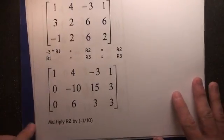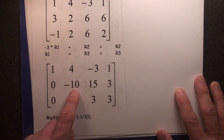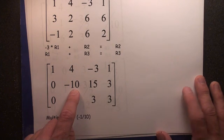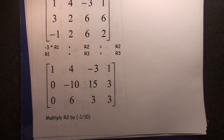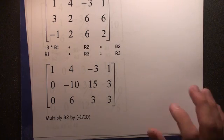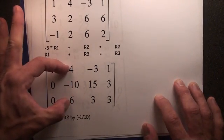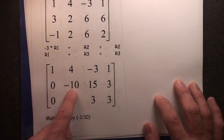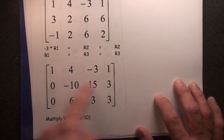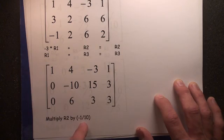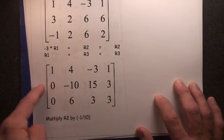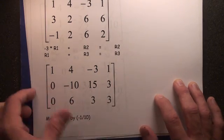Now our next goal is to make this position here a positive 1 and not a negative 10. So our priorities are to get 1s and then 0s. Now we're going to get a 1 and then these two as 0s. Let's make the 1 here by multiplying row number 2 by a negative 1/10th or dividing row number 2 by negative 10.